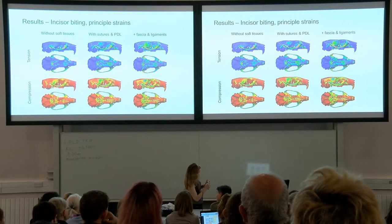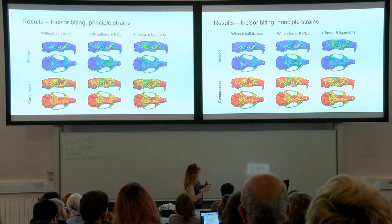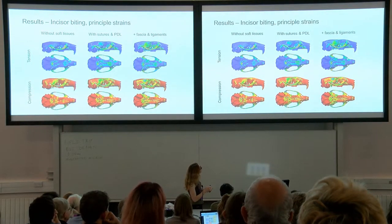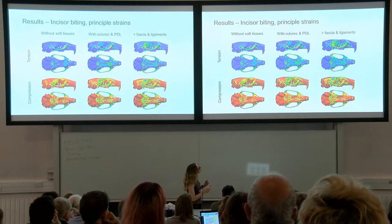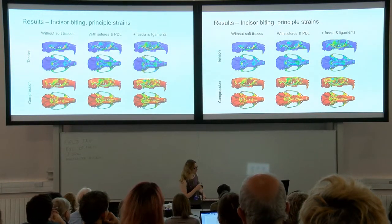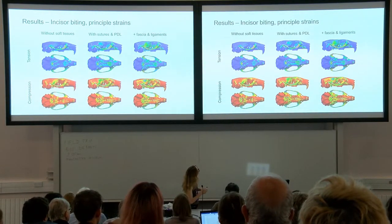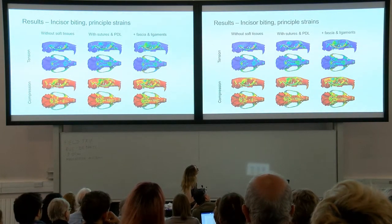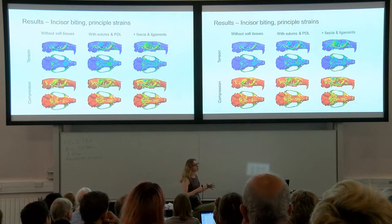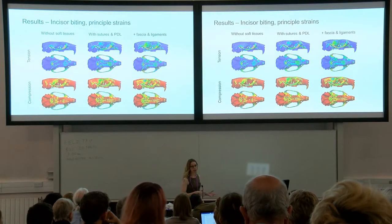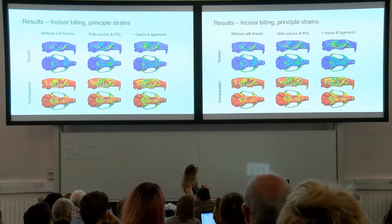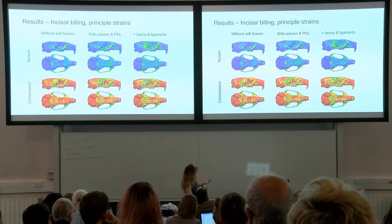On the top we have tension - the red or warm colours and grey indicate areas of high tension. Compression is shown at the bottom with reverse colours, so higher compression appears in grey and blue. The biggest difference is seen when we add the sutures, particularly on the ventral surface in the palate area. With the addition of sutures we're creating areas of mobility, making the whole skull more mobile and flexible - you get more distortion and higher strain magnitudes, as well as different distributions with more strain in some areas and more strain generally over the entire skull.